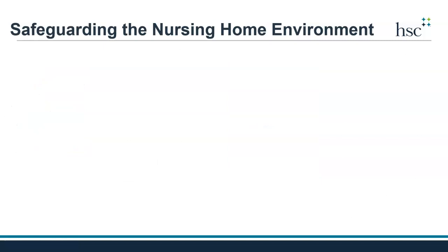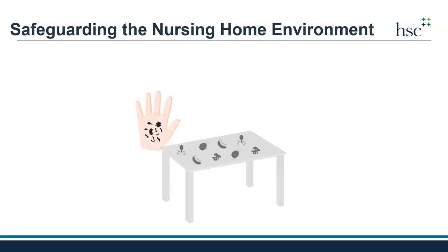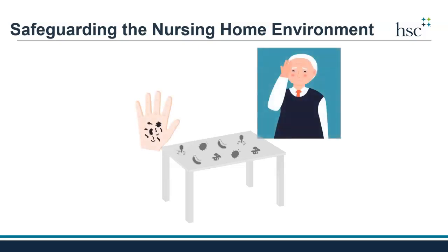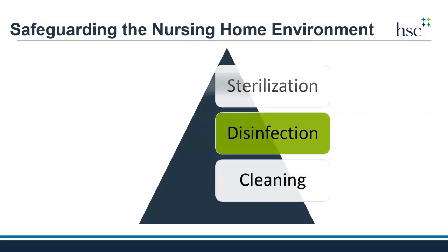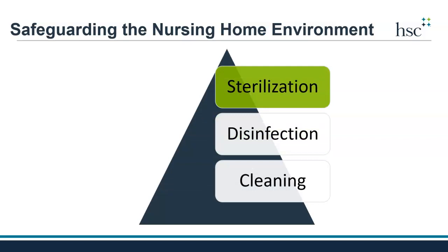Germs that contaminate objects and surfaces can get on our hands and then inside our bodies, which can then lead to an infection and make us sick. But what can we do to safeguard the nursing home environment from these germs to protect residents, visitors, and staff? It all begins with cleaning, which is the foundation for additional steps in safeguarding the nursing home environment. Surfaces and objects in a nursing home community must be cleaned to then be properly disinfected, and for some special objects they must also be sterilized to help prevent the spread of germs. The level required — cleaning to disinfection or sterilization — depends on the type of contact we will have with the object or surface.